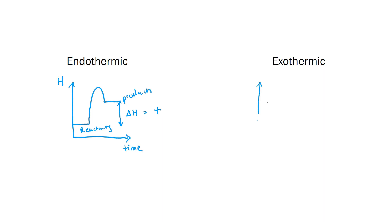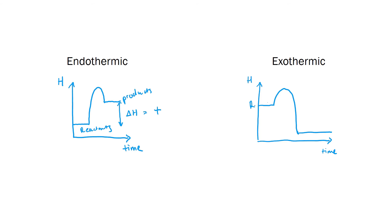Now, the graph of an exothermic reaction is slightly different. Again, we have the same axes, but the shape looks like this. Here you can see that the reactants have a greater enthalpy, or greater total energy, than the products. And our change in H, or our delta H, or our change in enthalpy, is actually negative.